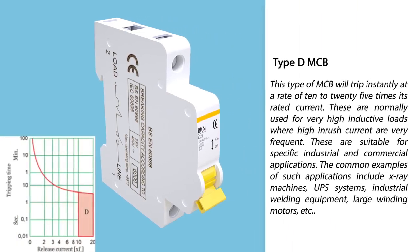Type D miniature circuit breaker will trip instantly at a rate of ten to twenty-five times its rated current. These are normally used for very high inductive loads where high inrush currents are very frequent. These are suitable for specific industrial and commercial applications, with common examples including X-ray machines, UPS systems, industrial welding equipment, large winding motors, etc.